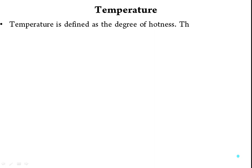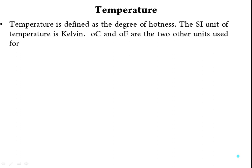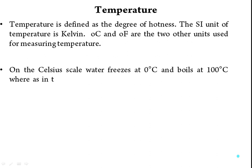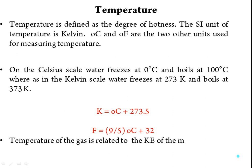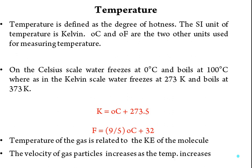Temperature is defined as the degree of hotness. The SI unit for temperature is Kelvin; degree Celsius and degree Fahrenheit are two other units. On the Celsius scale, water freezes at 0°C and boils at 100°C, whereas on the Kelvin scale, water freezes at 273 K and boils at 373 K. The relationship is: K = °C + 273.15. The conversion between Fahrenheit and Celsius is: °F = (9/5)°C + 32.